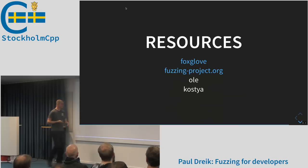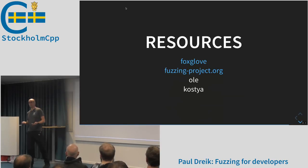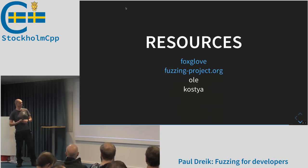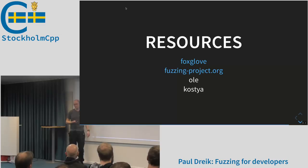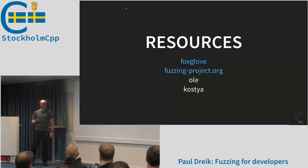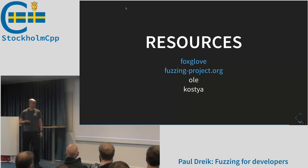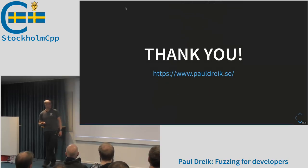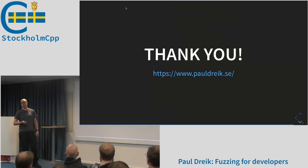Here are some resources. Foxglove Security has a blog post about how to use AFL over time — what to do with your corpus when you're done and how to maintain it. Thefuzzingproject.org is run by Hanno Böck, who has found lots of errors in many projects. There's also a good NDC Tech Town talk for getting started with AFL. And Kostja Serebryany from Google, one of the libfuzzer maintainers at LLVM, gives a fuzzing talk at CppCon every year — just pick one and watch it. Thank you.